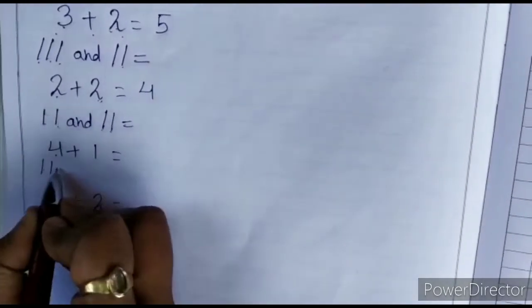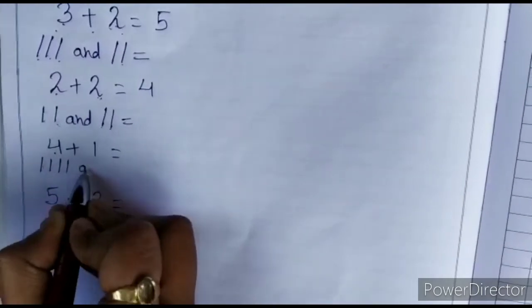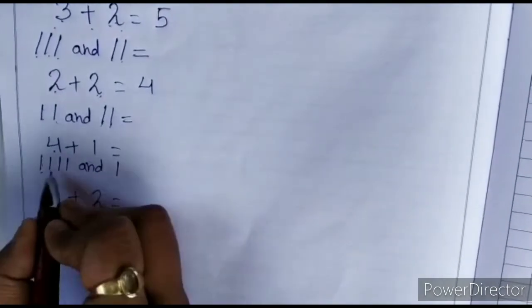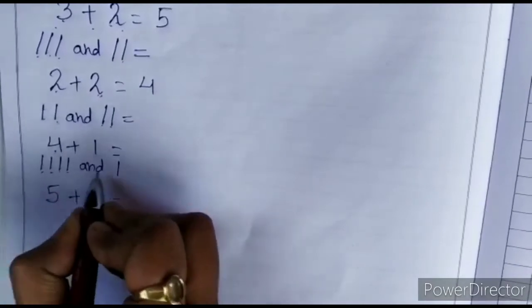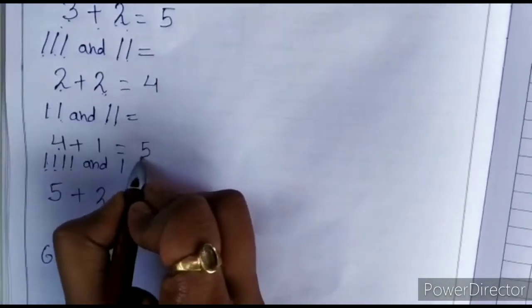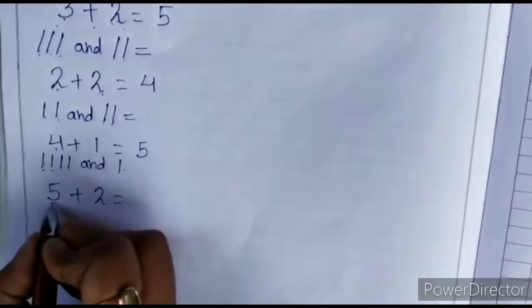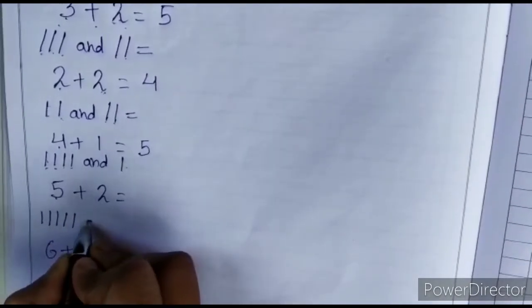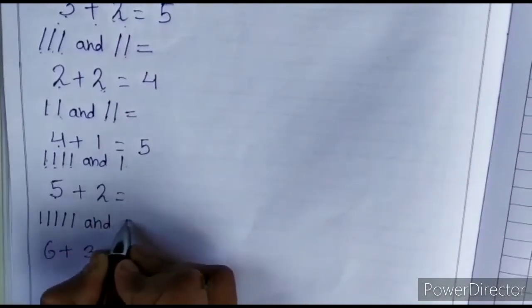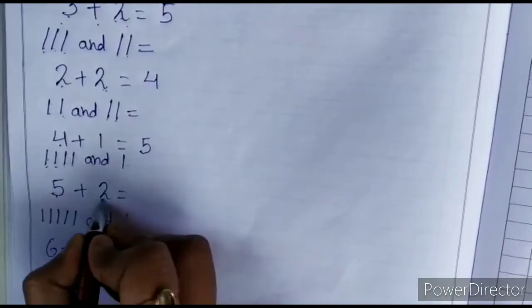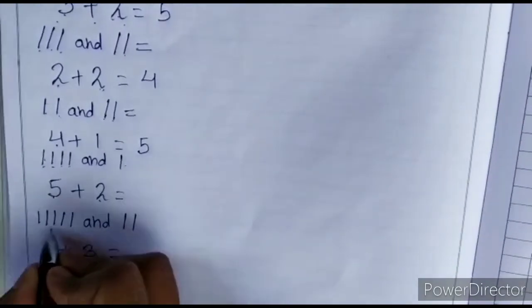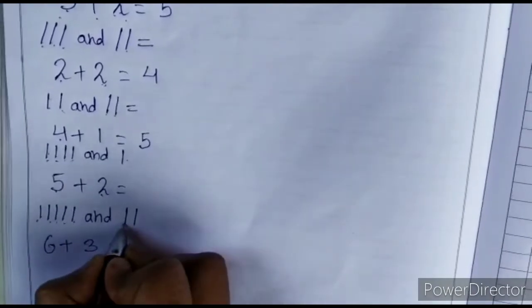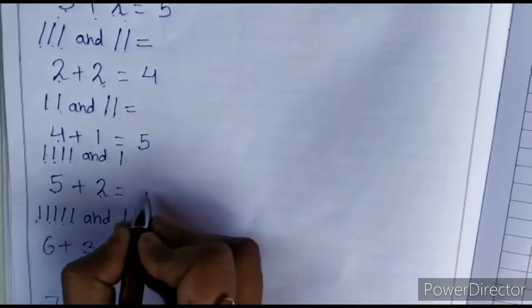4 plus 2. 1, 2, 3, 4, 5. 5 plus 2. 1, 2, 3, 4, 5. And 2. 1, 2. 3, 4, 5, 6, 7. Is equals to 7.